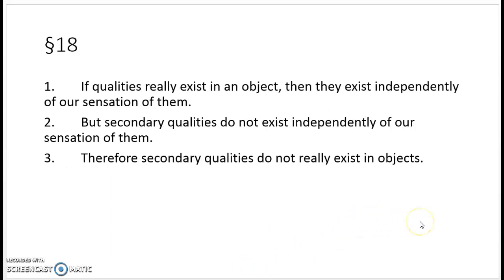Here's another argument along the same lines. If qualities really exist in an object, then they exist independently of our sensation of them — the object has that quality even if nobody's looking at it. If a tree falls in the forest, it's got all the same properties whether anybody is there to see it or hear it or not. But secondary qualities don't exist independently of our sensation of them. What is the sound of a tree falling in the forest if nobody's there to hear it? You've just got waves going through the air, but there's no sound until it hits an eardrum. Therefore, secondary qualities don't really exist in objects. Nothing like smell exists unless there's somebody's nose around to smell it — it's in the nose, not in the object.